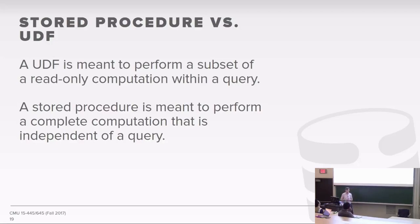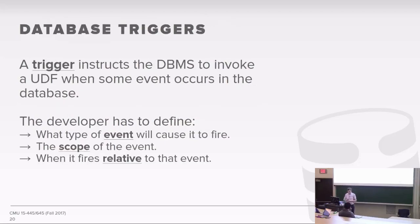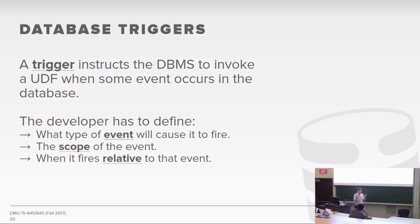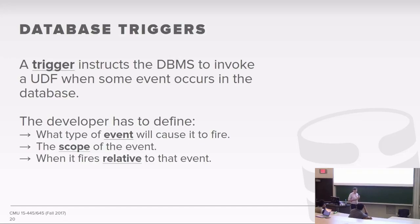Another kind of construct we can have is called a trigger. A trigger is a way to tell the database system to invoke some UDF when some event occurs inside the database server — for example, if I update a tuple, I want to update another table to say this thing got modified, or check whether the value is correct. When you define a trigger, you define three basic things: what type of event will cause it to fire, the scope of the event, and when the trigger will fire relative to that event.